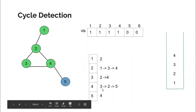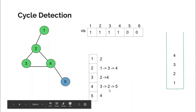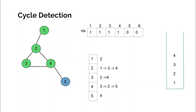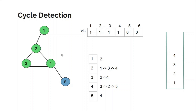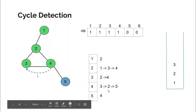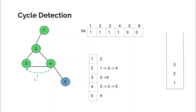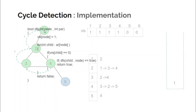In the adjacency list of node four we have three, and since three is visited we check whether three is its parent — it is, so not a back edge. We move on to two, and since two is also visited we check whether two is four's parent — it is not. Hence this edge is a back edge, indicating the presence of a cycle. We return true from here. Node three receives true and returns to its parent, propagating back up until node one returns to main that yes, a cycle has been found.